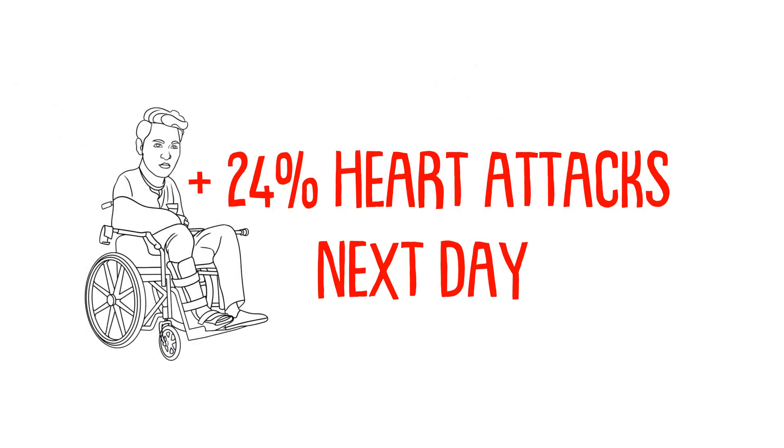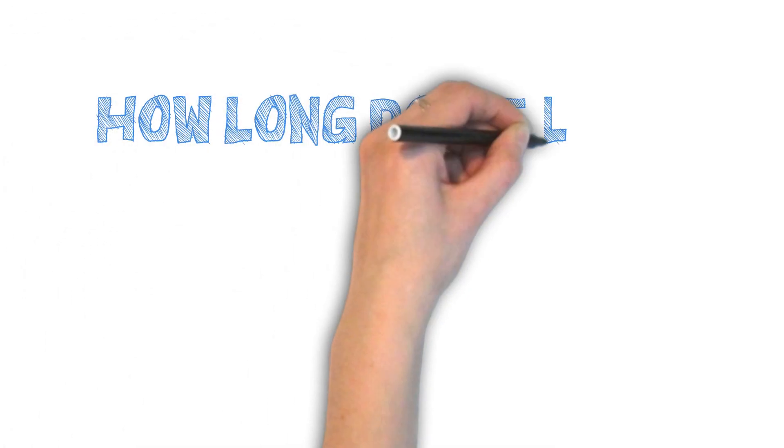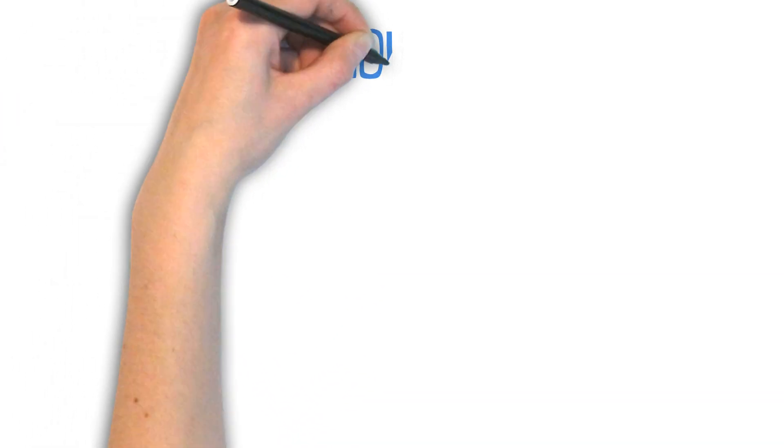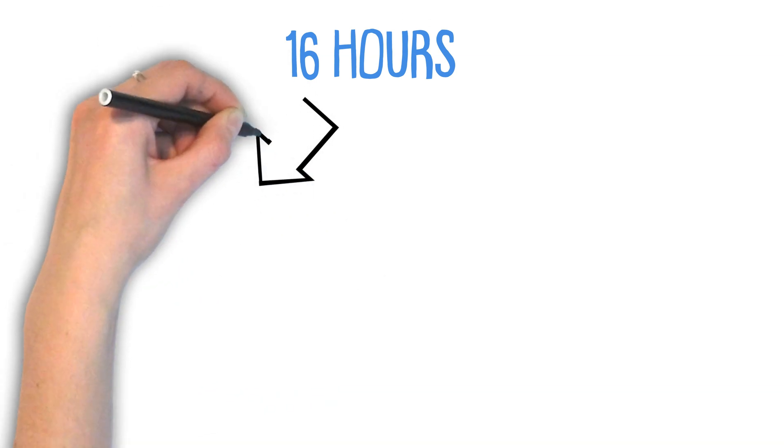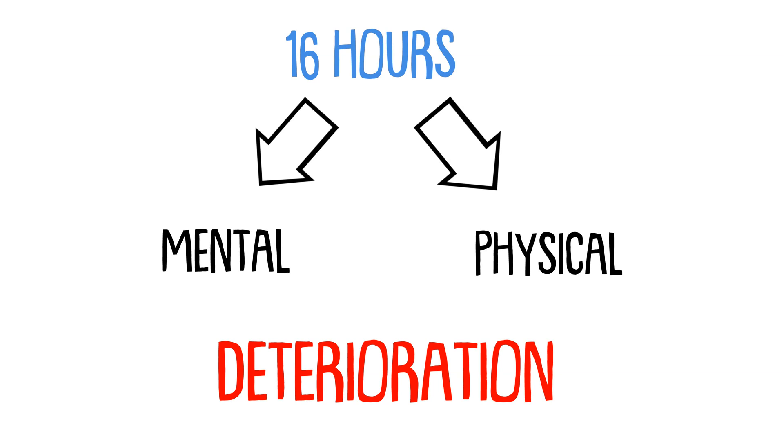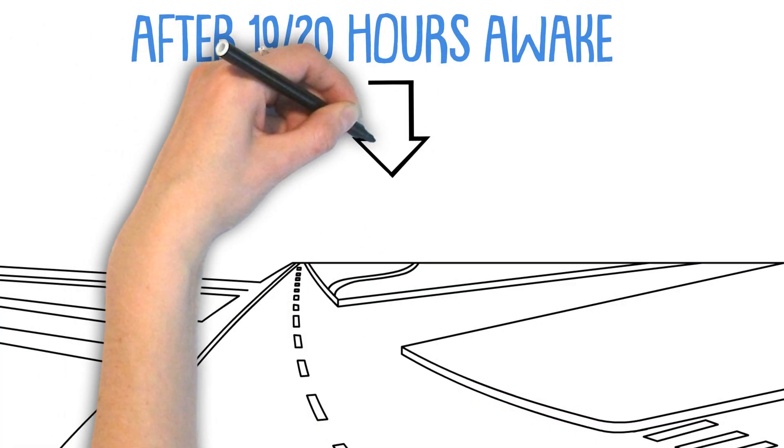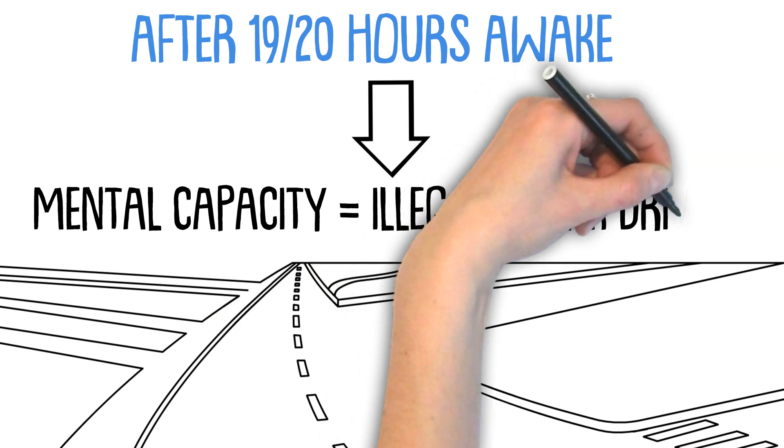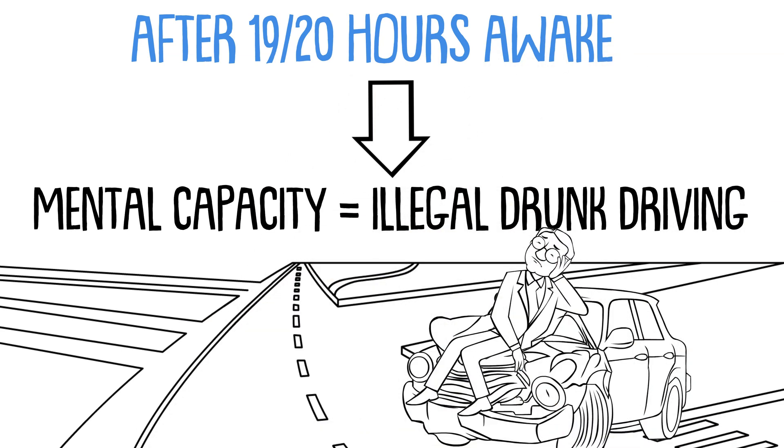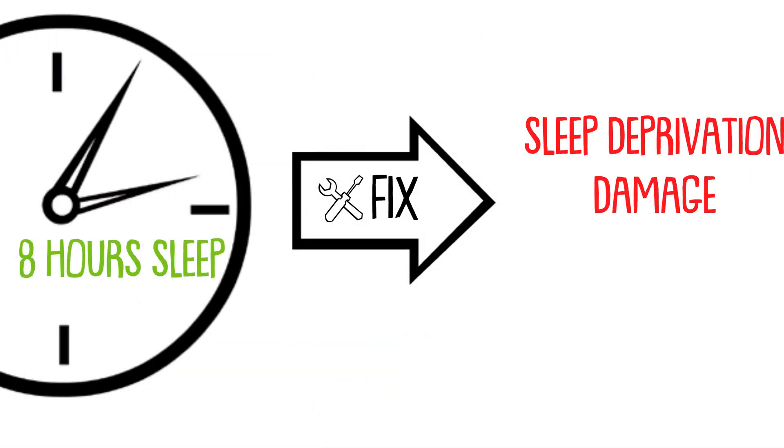How long can we actually last without sleep before we start to see declines in your brain functions and impairments with your body? It seems to be around 16 hours. Once you pass the 16-hour mark of being awake, that's when you start to see mental and physiological deterioration in the body. Past the 19 or 20 hours of being awake, your mental capacity is so impaired that you would be as deficient as someone who was legally drunk behind the wheel of a car.